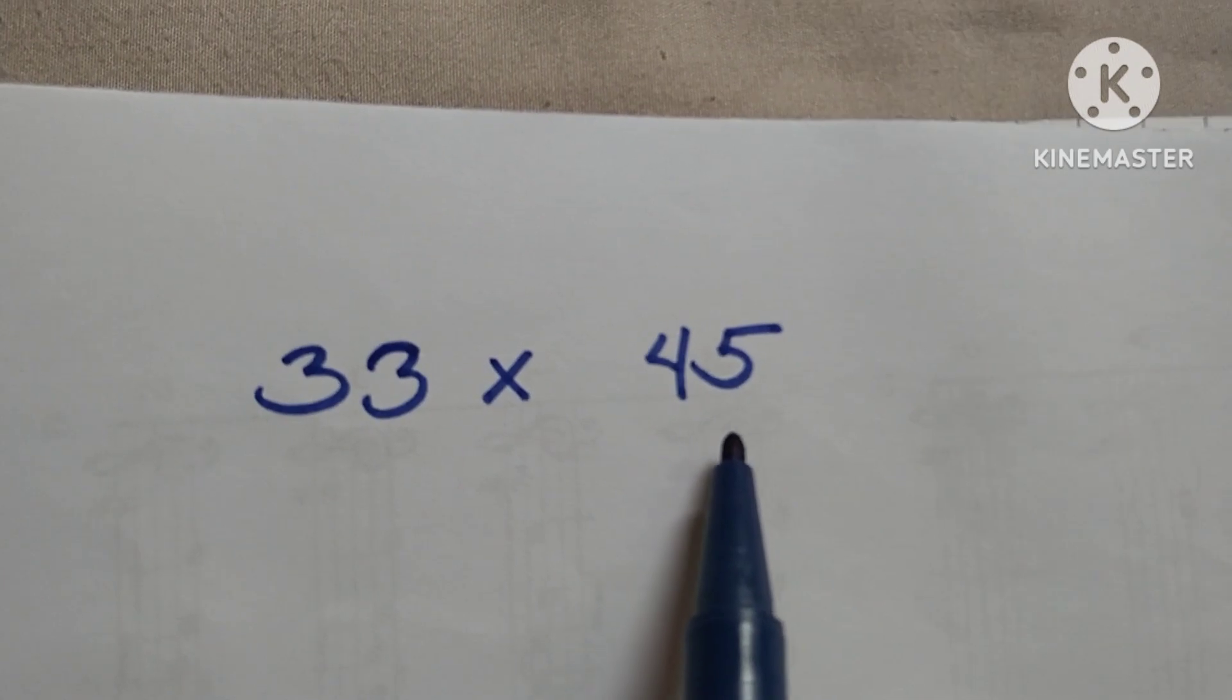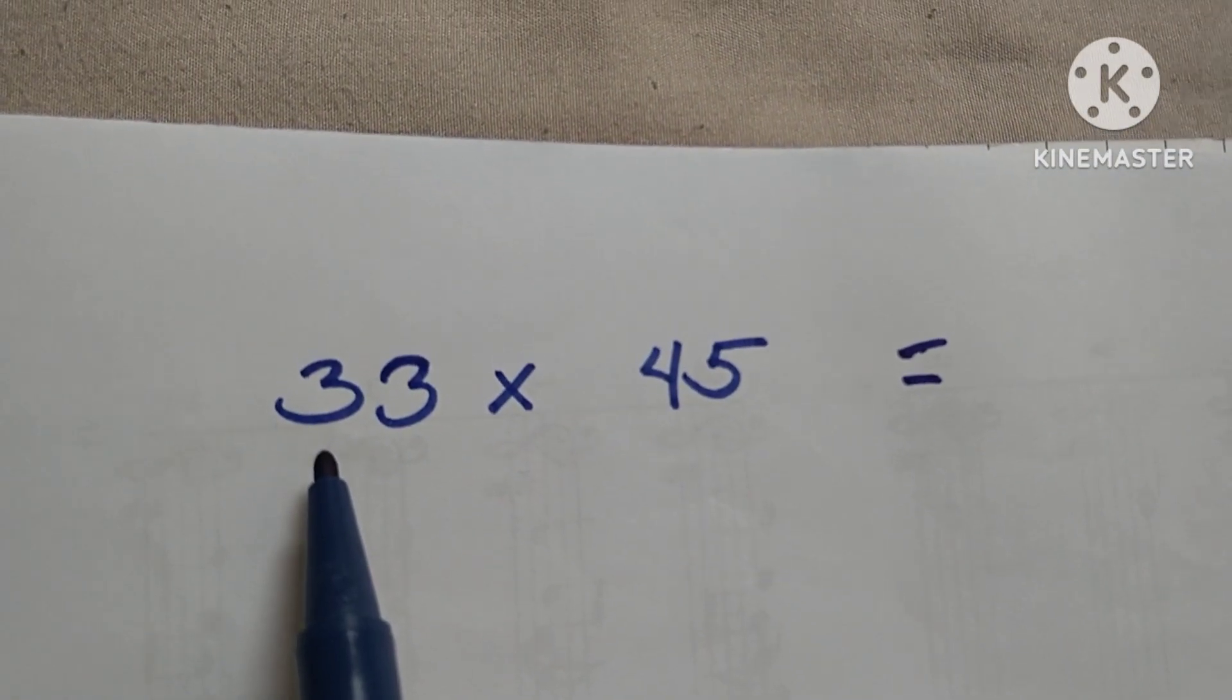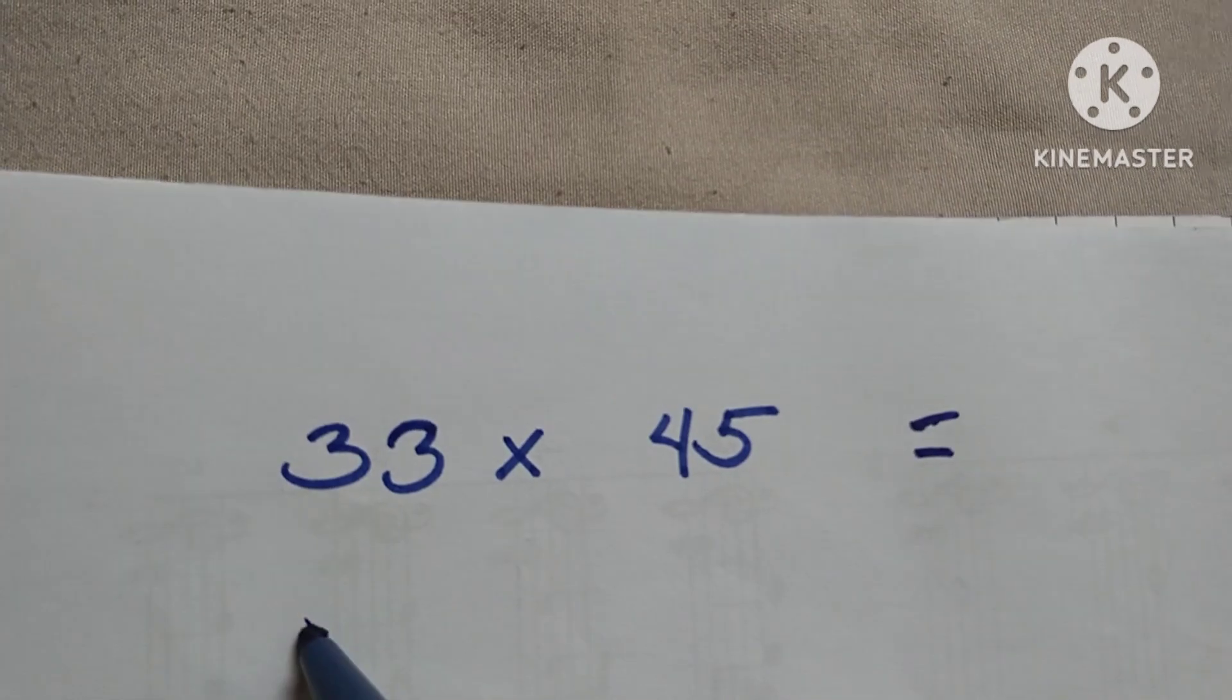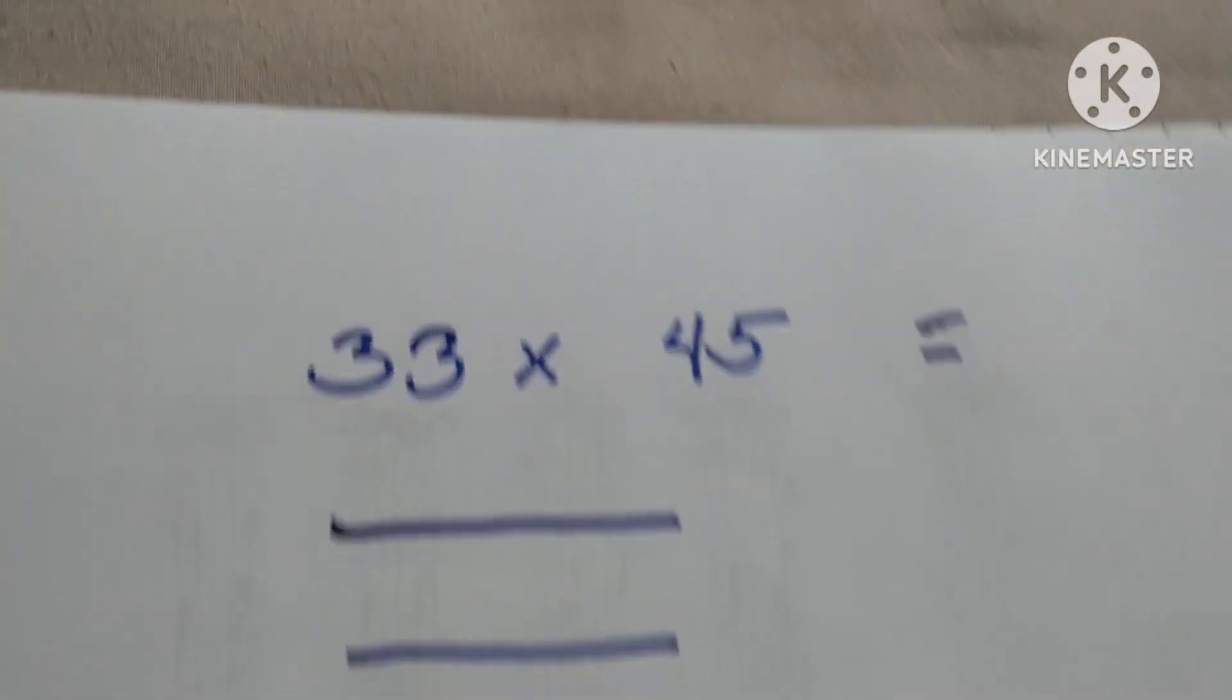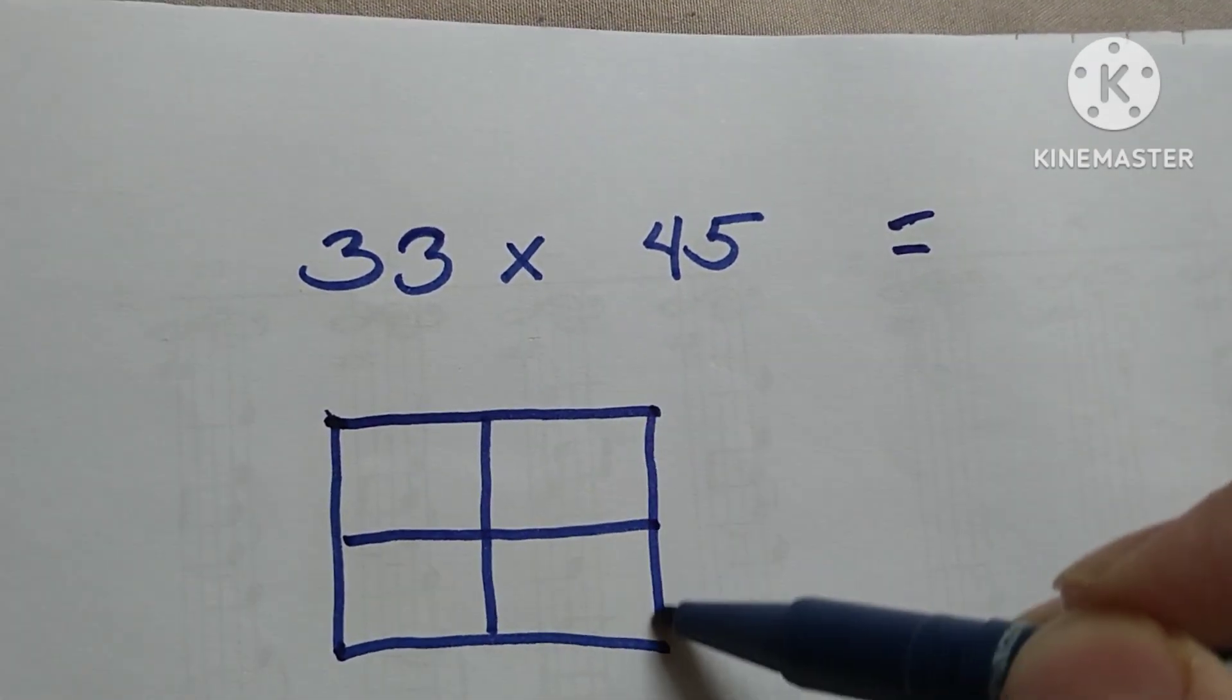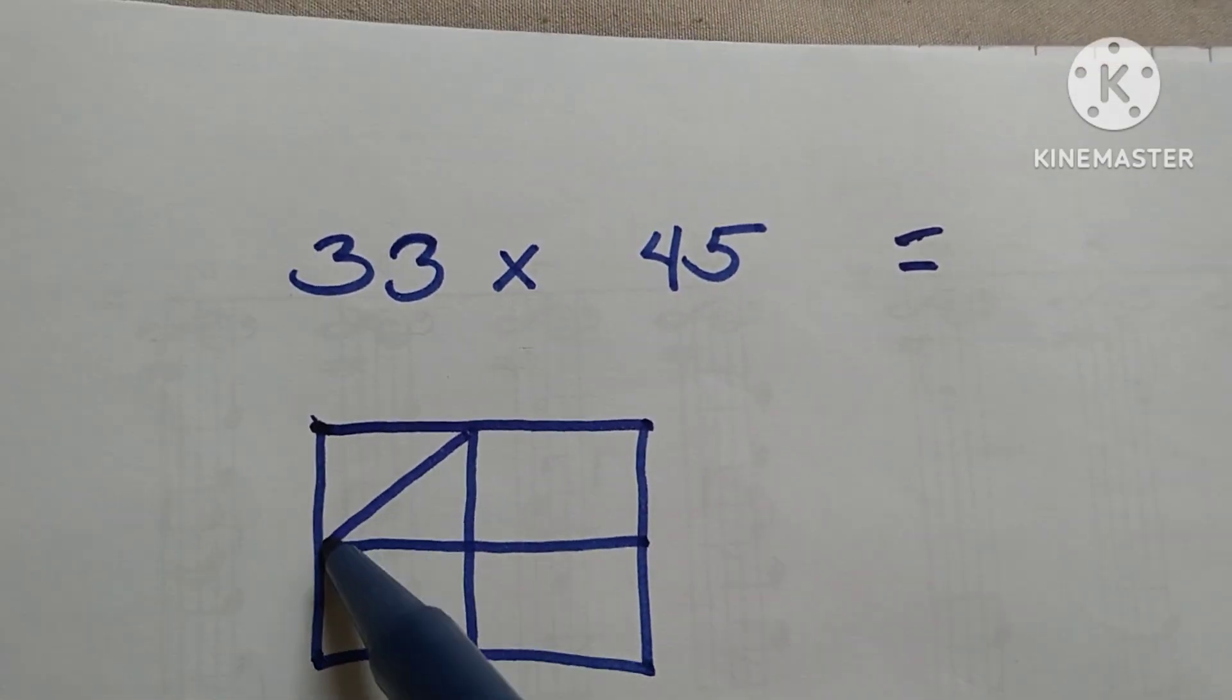For example, 33 times 45. The first step is to make rows and columns—two-digit columns. Two columns and then two rows, so two by two.